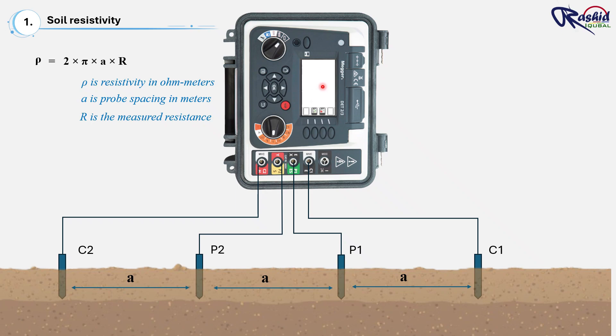Let's take an example. If probe spacing is 3 meters and after measuring from the device we get resistance is 20 ohms, so we can put this value in that formula: ρ = 2 × π × 3 × 20. This is 20, this is the resistance what we measured from this device, and we maintain 3 meter distance. So this is the 3. After solving this equation, we got 377 ohm-meter.